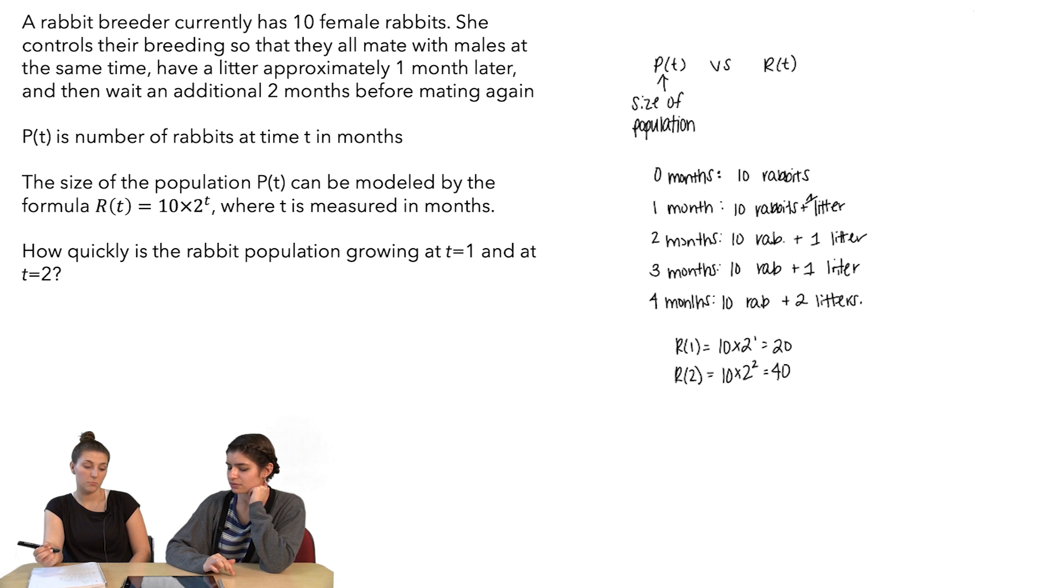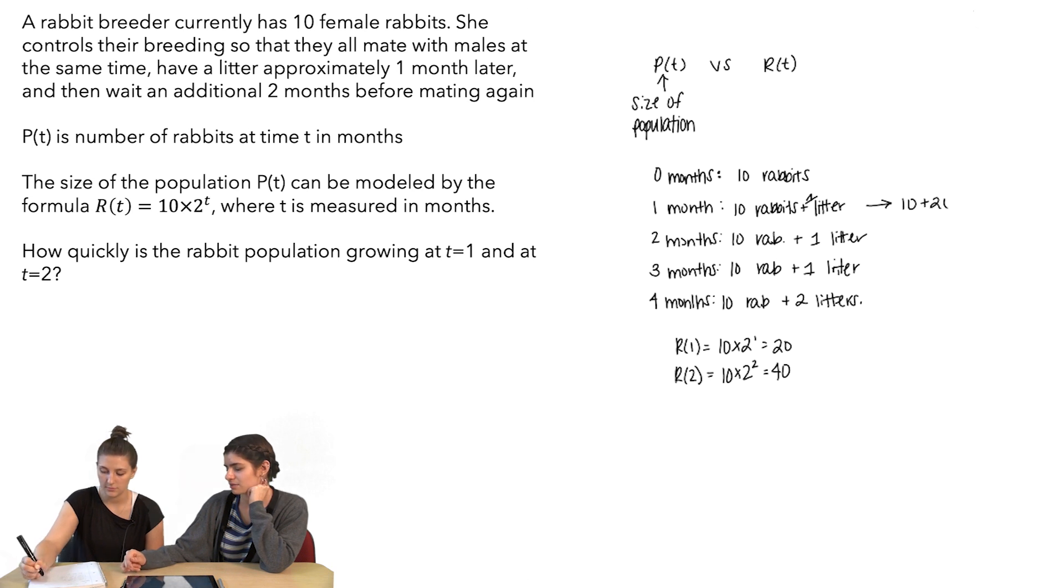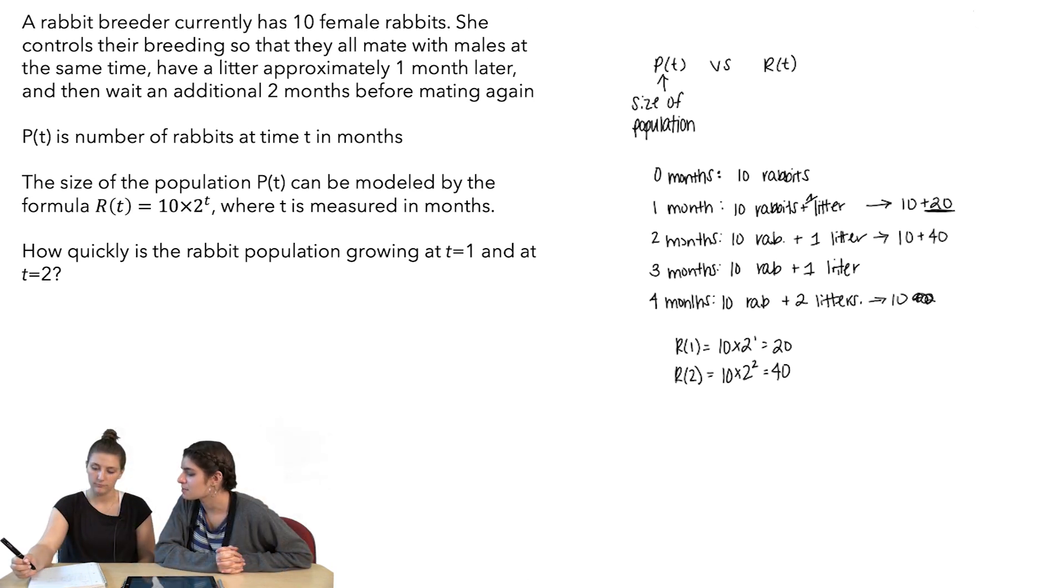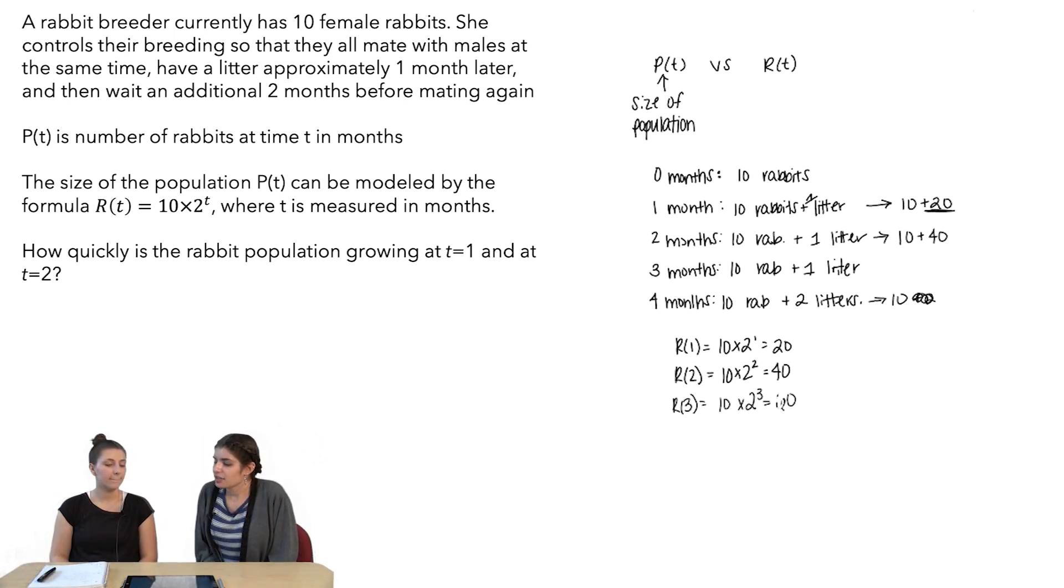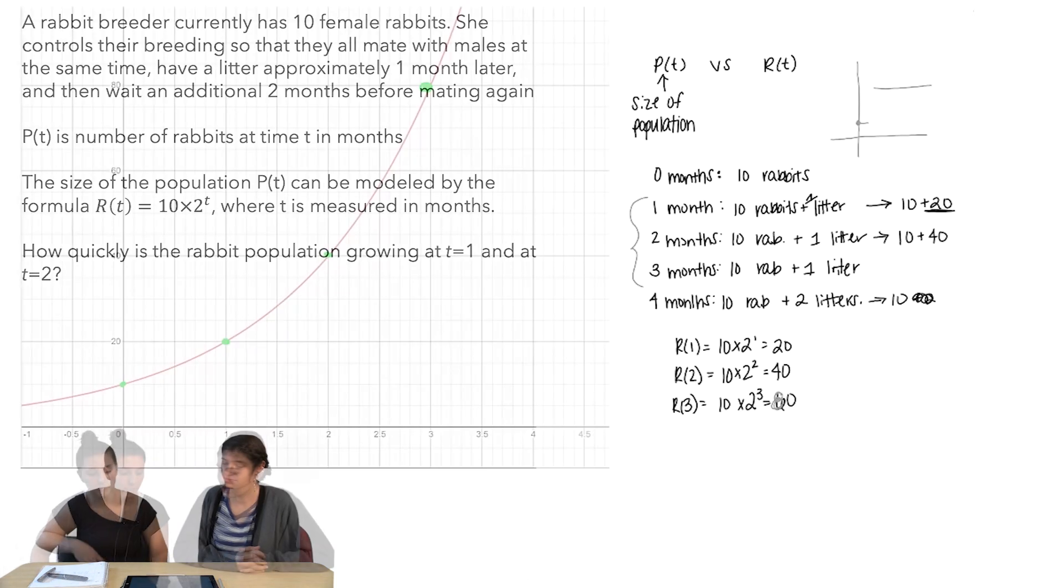So is it that at one month, it's just growing by 20 rabbits? Right. And at two months, it's growing by 40 more rabbits. You're saying that doesn't make sense because we're not supposed to be growing at two months. Yeah. I think your idea of graphing it might help to see it.